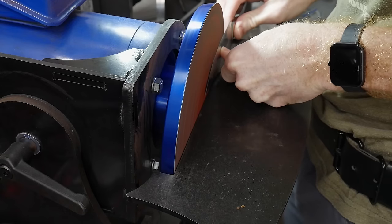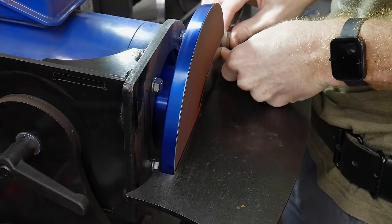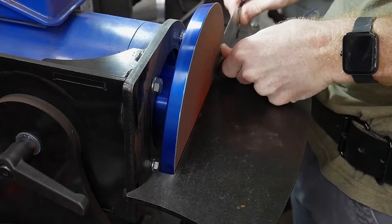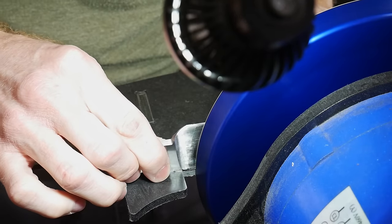Before I start hand sanding the bevels I go through a few sheets of 600 grit Rhino wet on the disc grinder. This greatly reduces the amount of time I spend hand sanding on the bench.